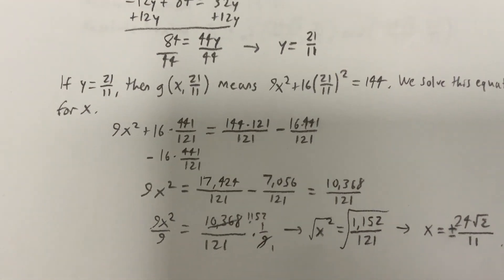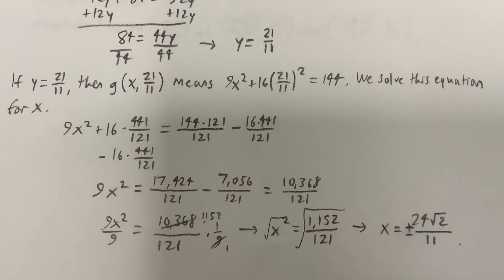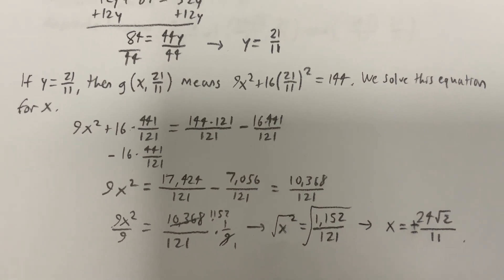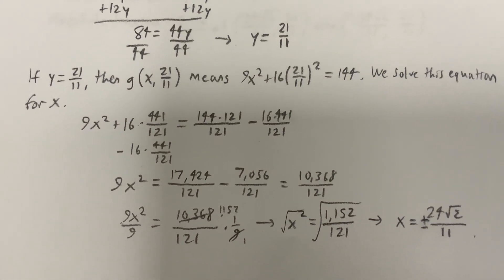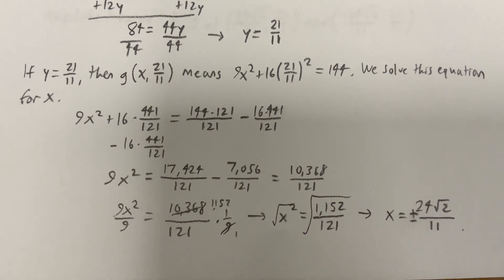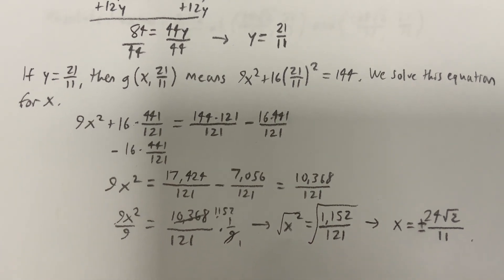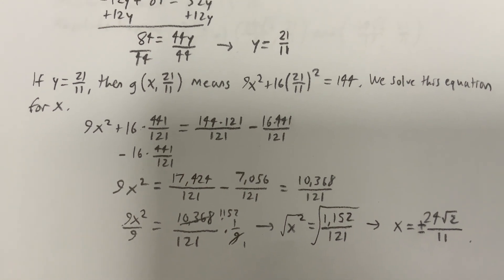So if y equals 21/11, then g(x, 21/11) means 9x² + 16(21/11)² = 144. So we're solving this quadratic equation now for x. And we'll go through all this detail, x will wind up being plus or minus 24√2/11.